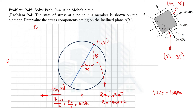Now we need to find the stress components at inclined plane AB. Plane AB makes an angle of 60° with the horizontal, or equivalently 30° with the plane having stresses of 90 and 35 MPa. That plane is represented by this radius line on the Mohr's circle, so we need to rotate in the anticlockwise direction by 30°. In Mohr's circle, angles are doubled.